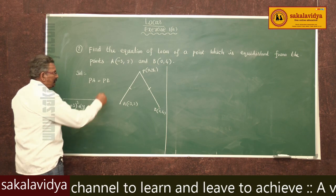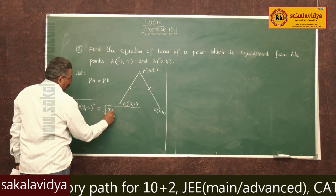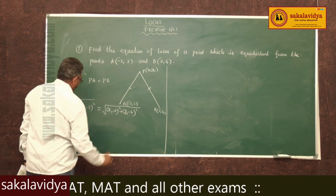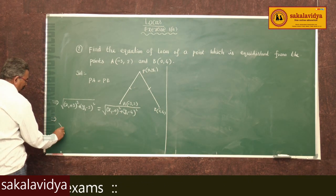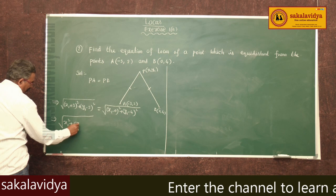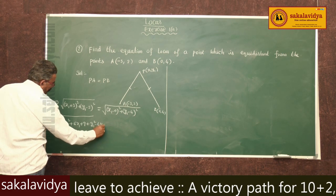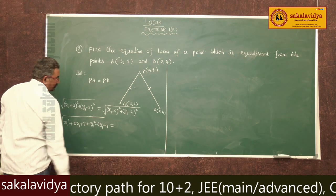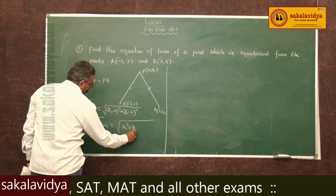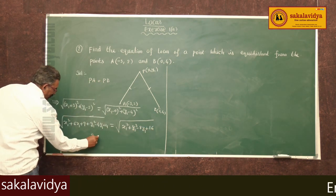Similarly, PB can be written as: root over (x1 minus 0) whole square plus (y1 minus 4) whole square. Expanding: root over x1 square plus 6x1 plus y1 square minus 4y1 plus 4 equals root over x1 square plus y1 square minus 8y1 plus 16. Squaring on both sides.